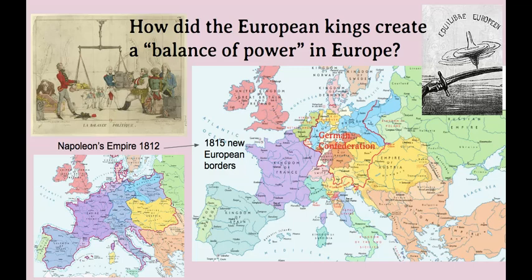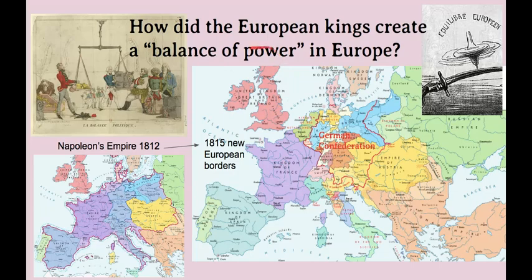One of the most noteworthy things they created was the German Confederation. In the middle of Europe, the German Confederation was carved out of a combination of lots of tiny little German states assembled together into a loose confederation that could function as one political entity and stand up to the strength of the Kingdom of France. This balance of power was not super stable, but it was the most stable balance of power that Europe had seen in a very long time. By the end of the Congress of Vienna, there were five major powers in Europe: Britain, France, Austria, Russia, and the brand new German Confederation led by its largest state, Prussia.